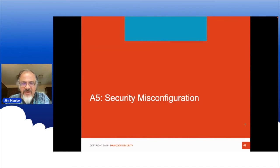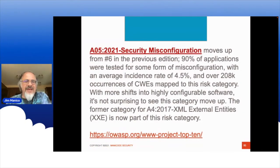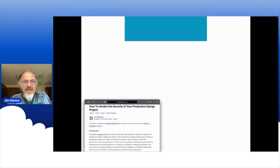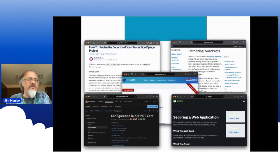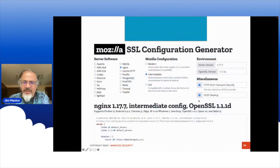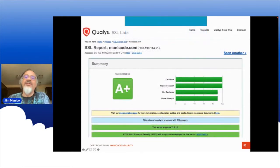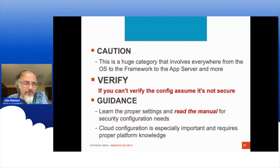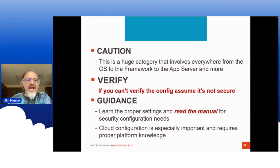A5: security misconfiguration. This is a big deal — 90% of apps tested have some form of configuration problem. It can span everything from passwords to file permissions and more. Read the manual, get hardening guides, and have a golden image where you've hardened that particular framework so developers are reusing it. There's also the TLS configuration guide from Mozilla. Configure your XML parser to stop XXE, and take your configuration seriously, especially when it comes to the cloud.